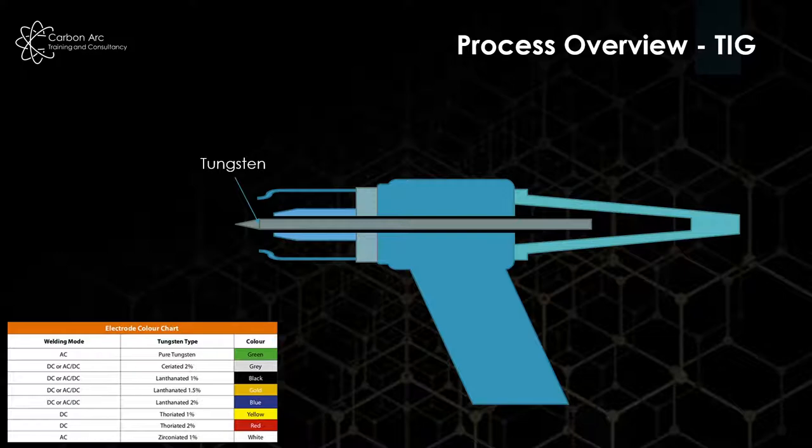The best alloy for current carrying capacity is thoria where we get a thoriated electrode, normally our red two percent electrodes. They stay relatively sharp most of the time and have good high amperage capacity.